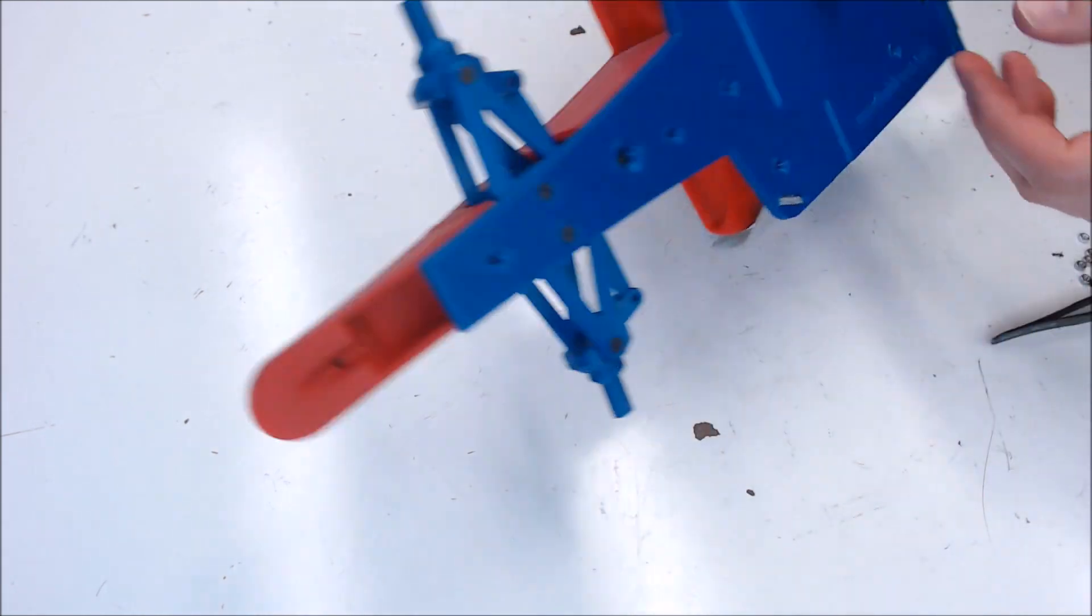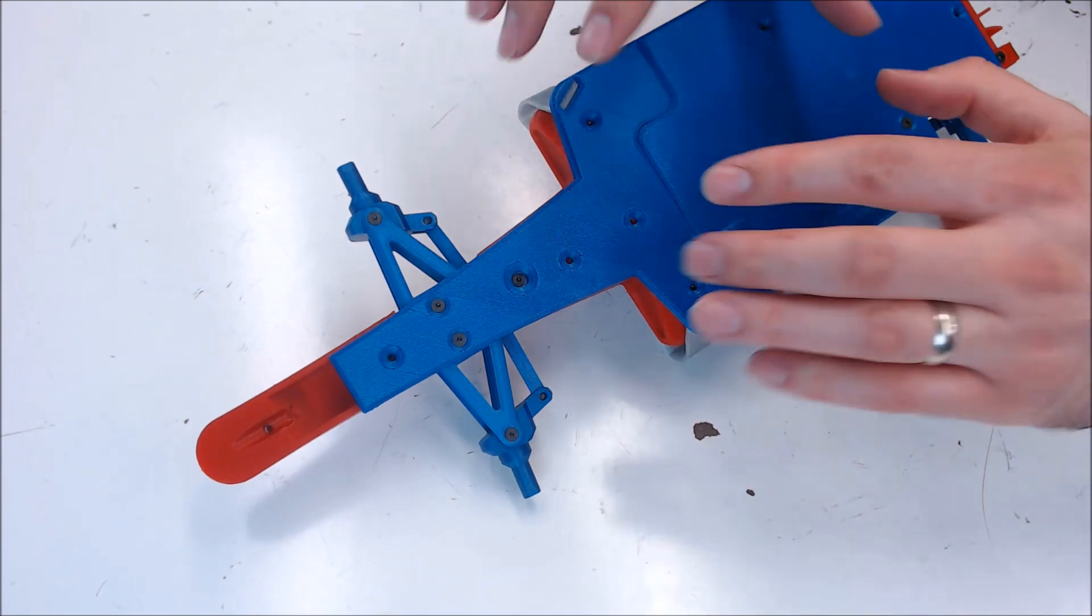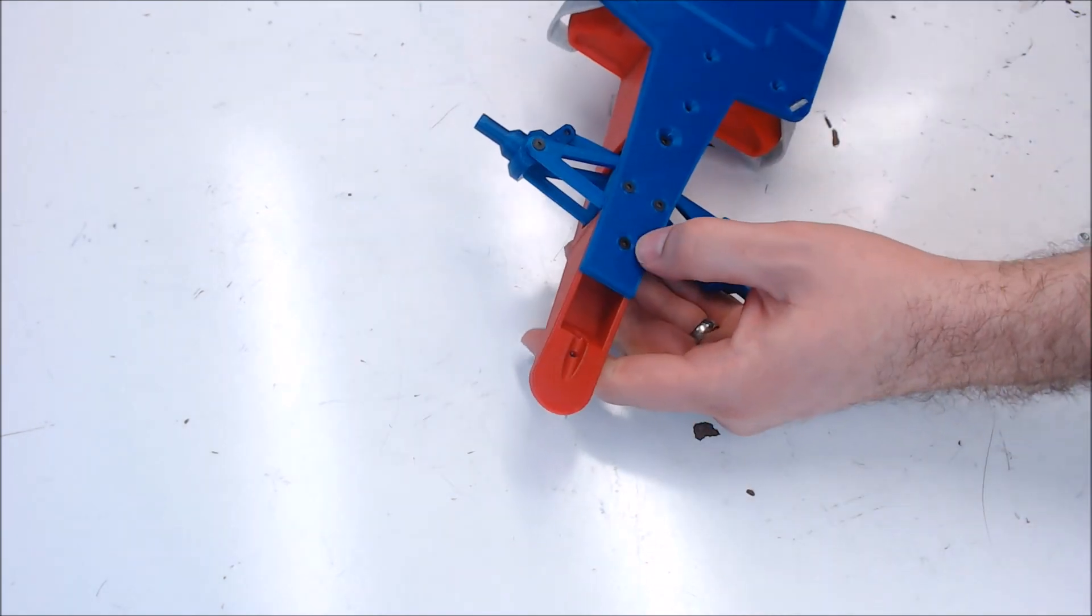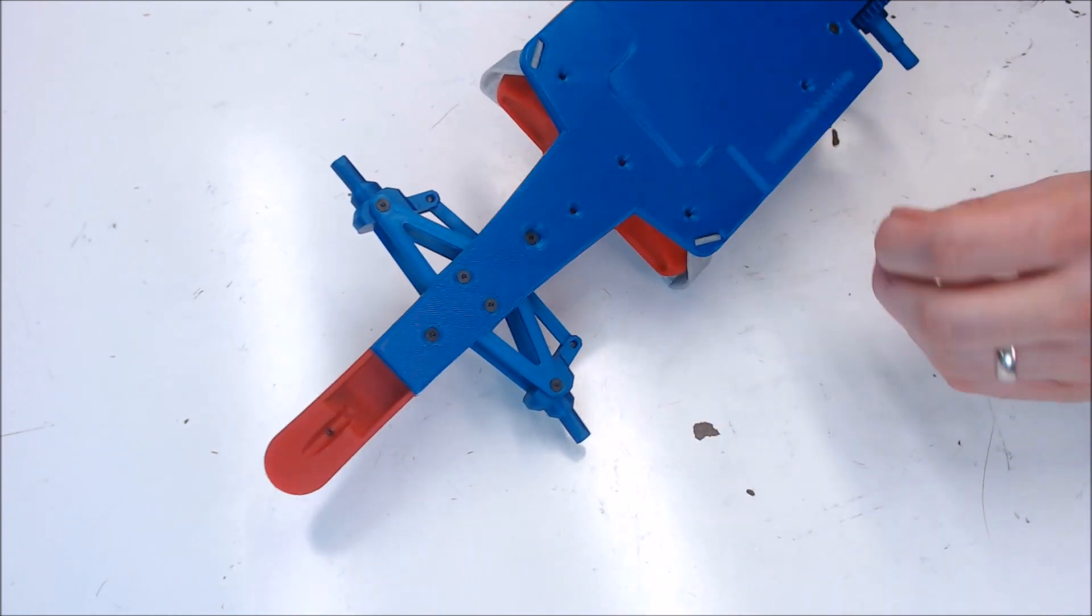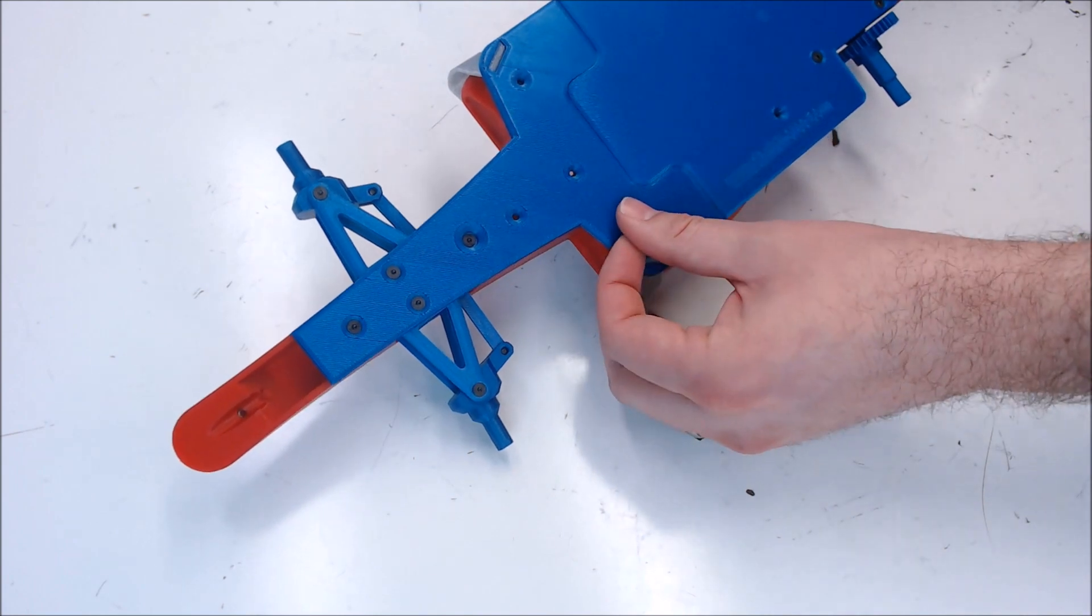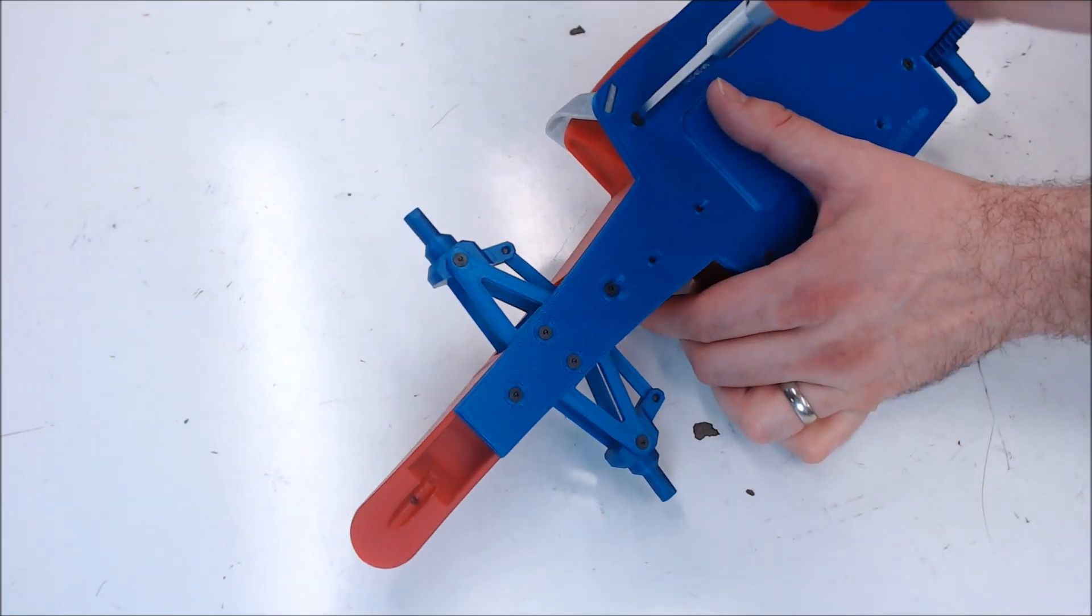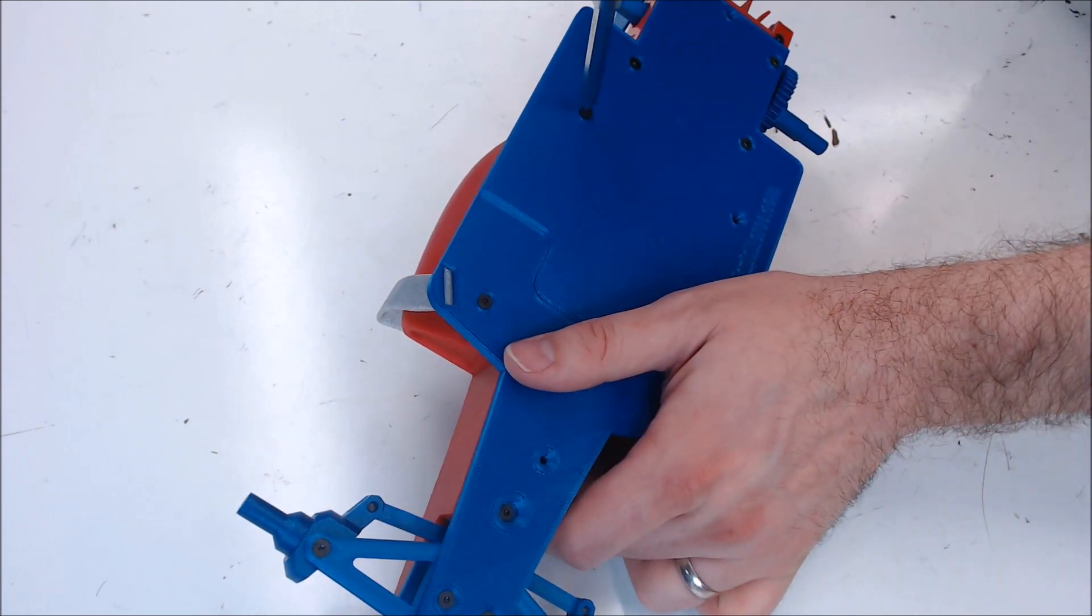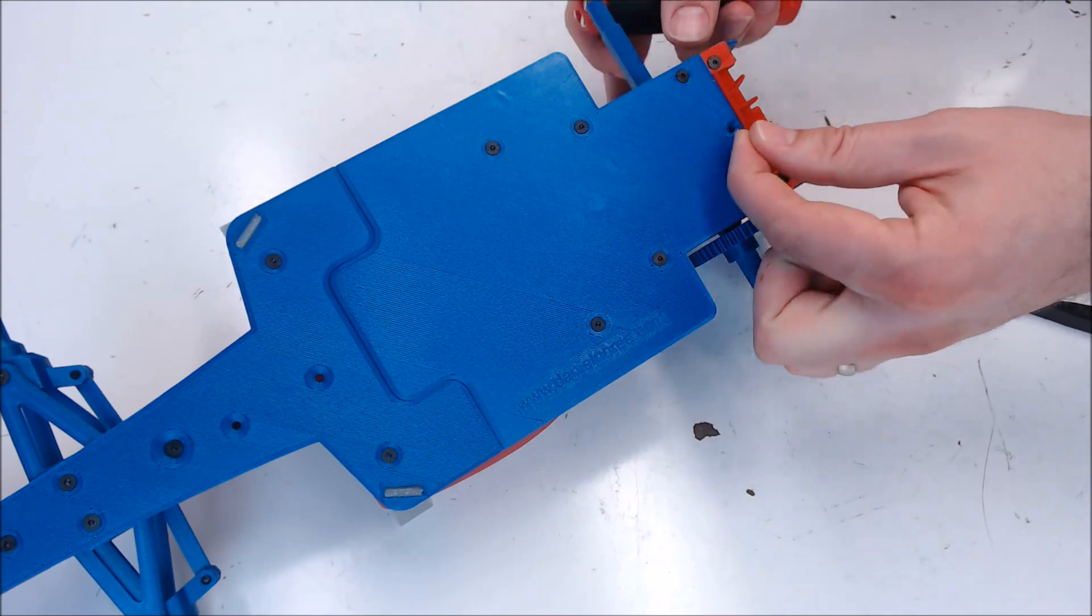Now we can flip the whole car over and put some M3 x 8mm screws in to attach the whole body to the base. One in the nose. These two are for the servo mount. We'll use those during the electronics install. One screw here. Another over here. One right here. Another right here. And then finally one in the very back.